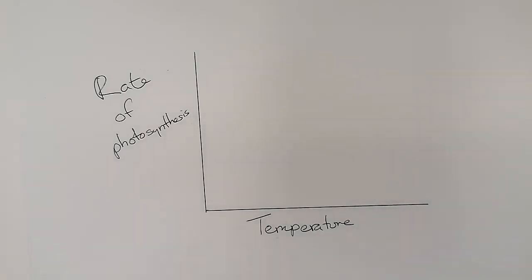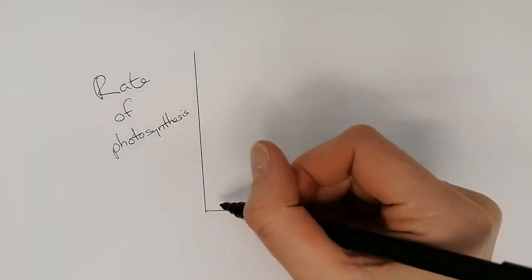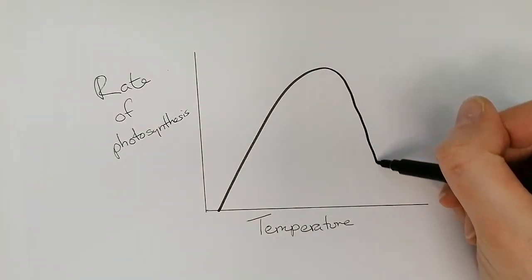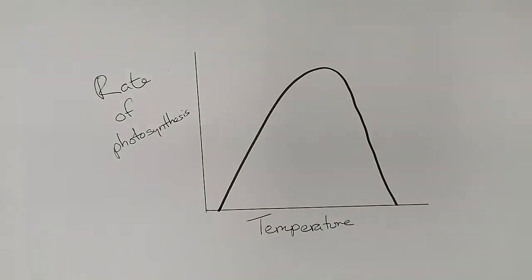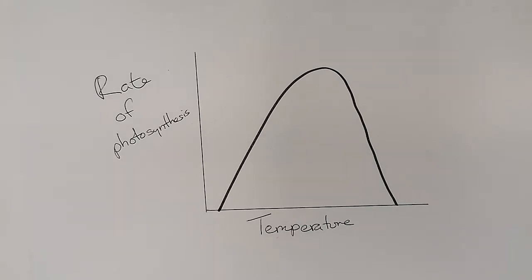Hi, this is Mrs Sykes and this video is looking at photosynthesis graphs, specifically the temperature graph. The temperature graph has a very characteristic up and back down shape, which is the same shape as an enzyme temperature graph. That's because photosynthesis is a reaction that uses lots of enzymes, so the effect of temperature on enzymes is also shown in photosynthesis.